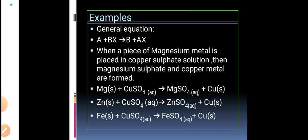Let us understand the general mechanism. We have an element A reacting with BX to give rise to B plus AX. Here A is a metal, and the condition for displacement is that A should be more reactive than B — only then can A displace B from BX.